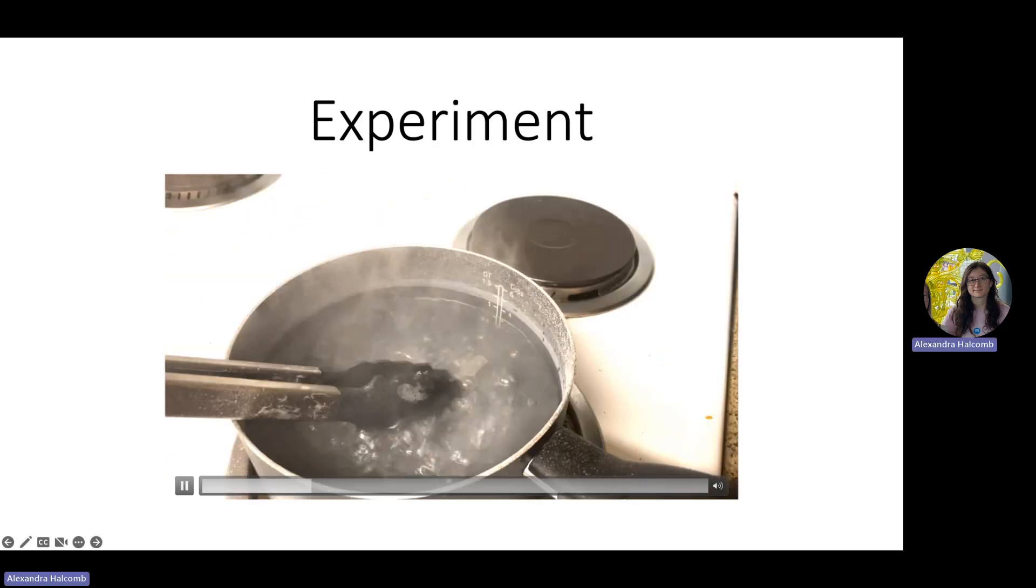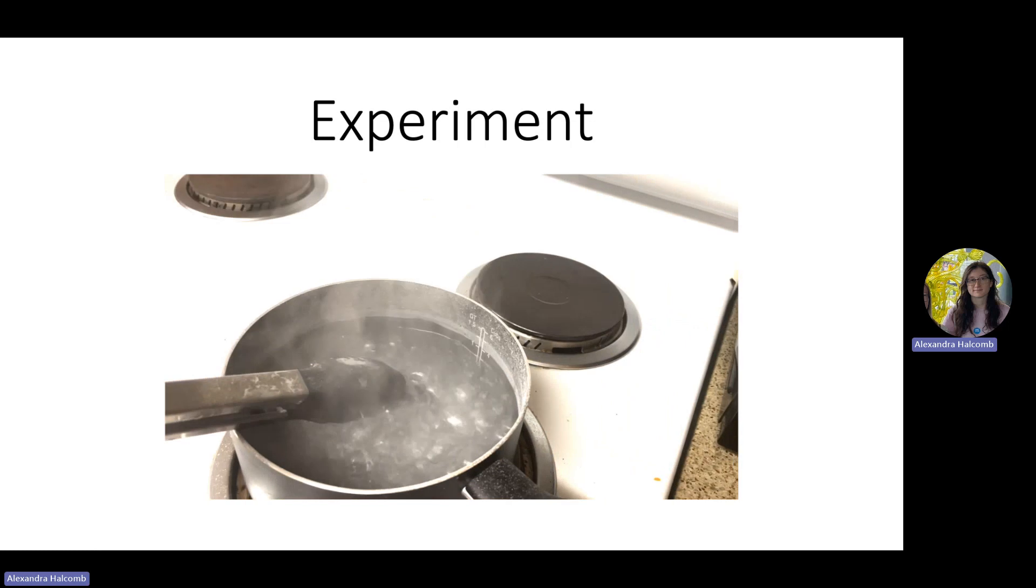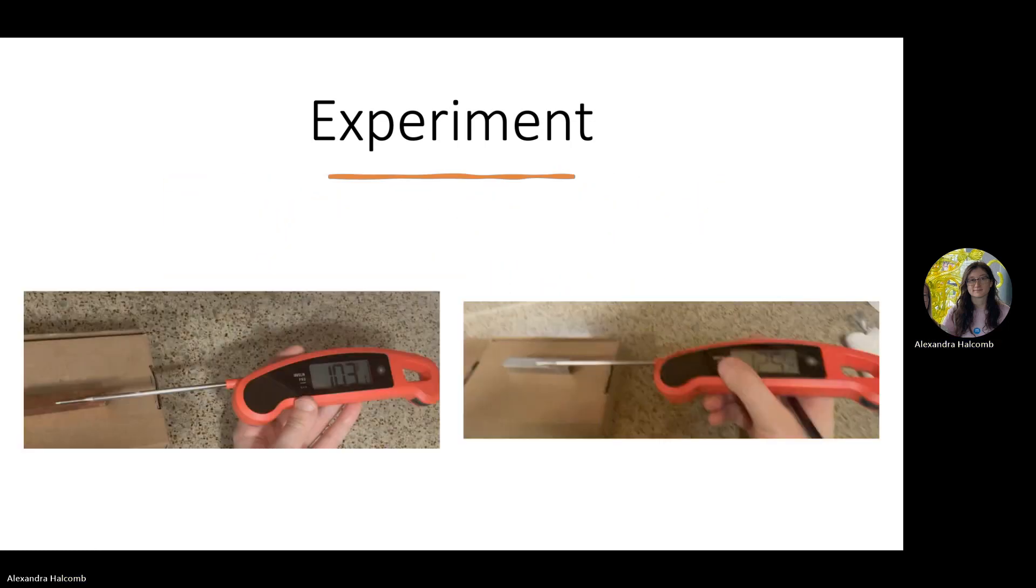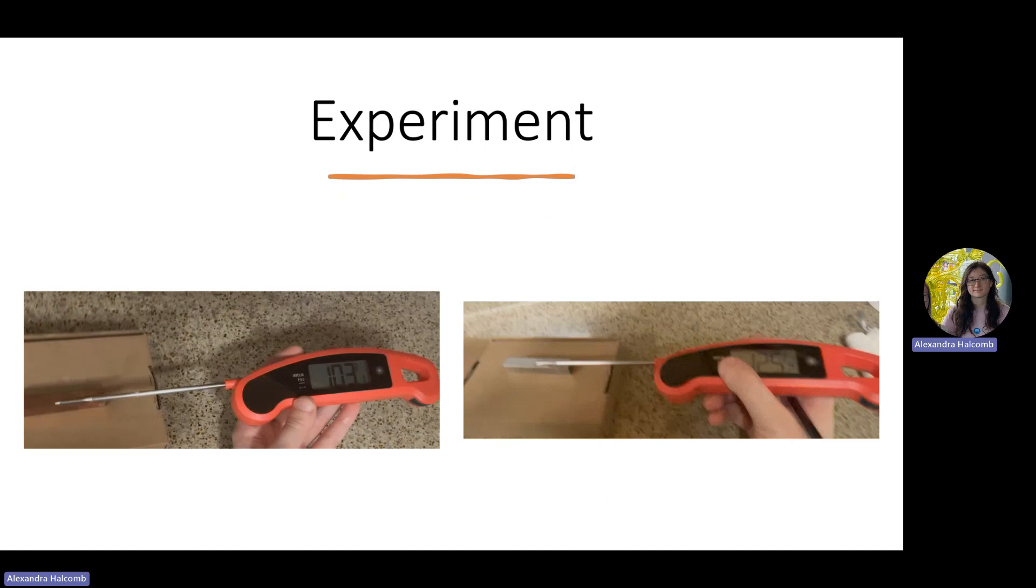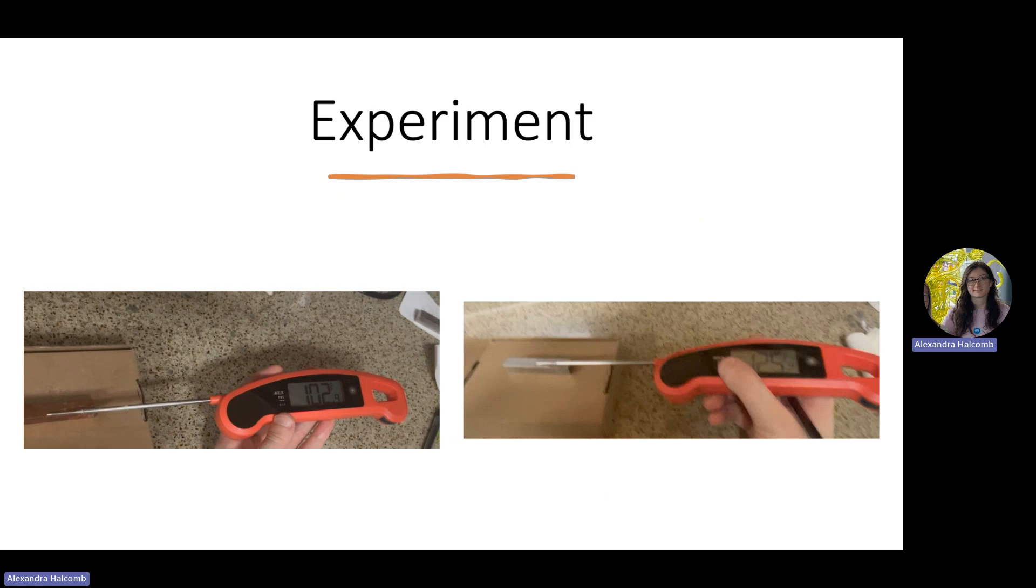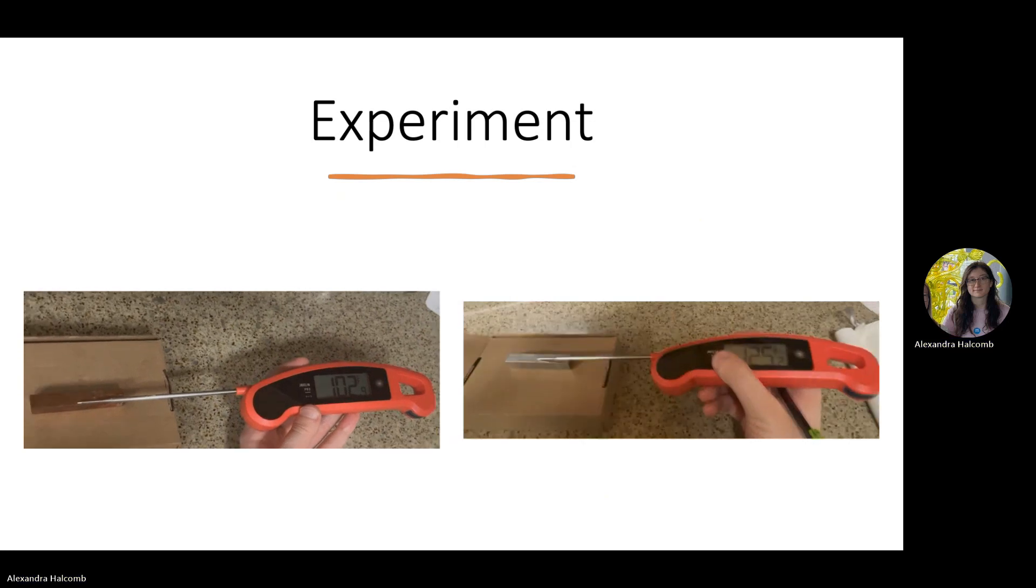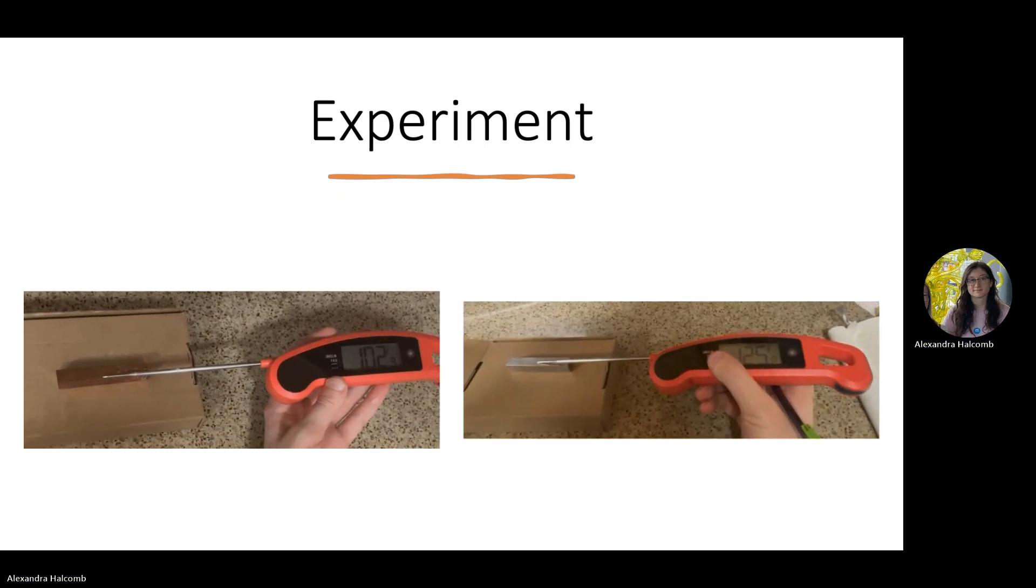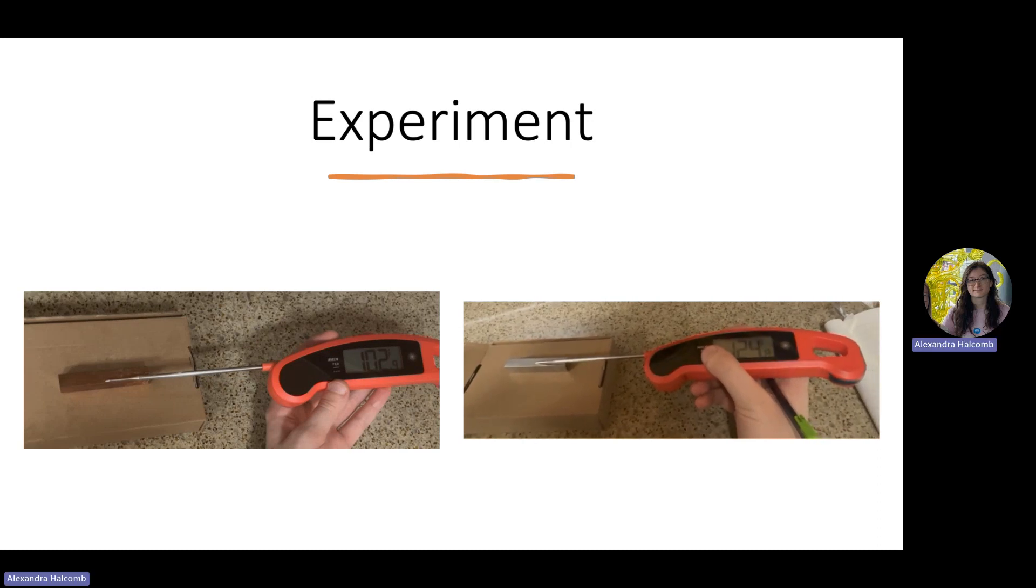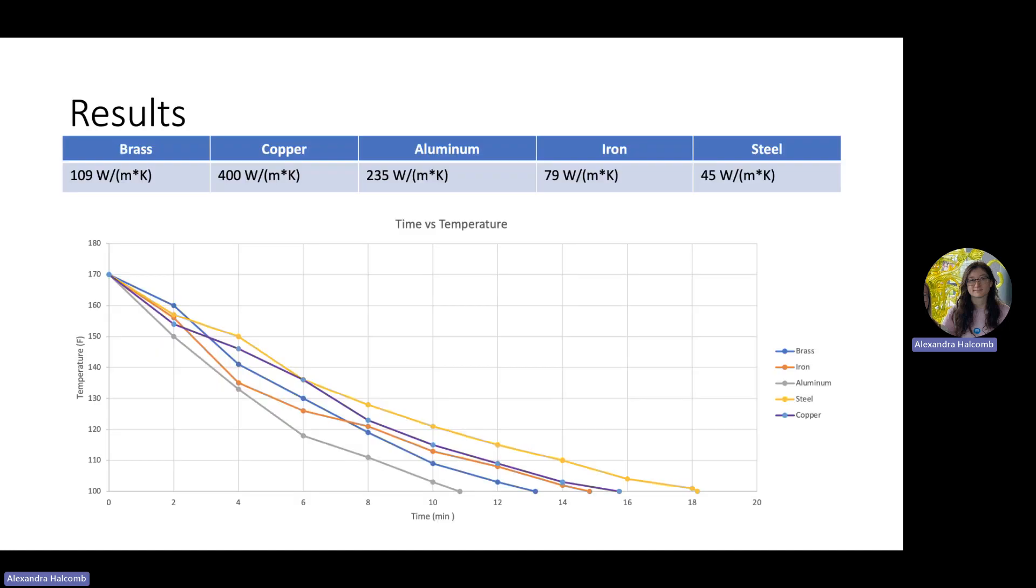This is showing how I heated up all the metals, and this is an example of how the material's temperature dropped. You have copper and aluminum on here.